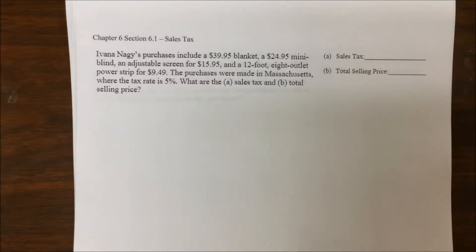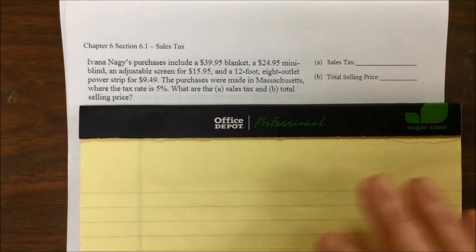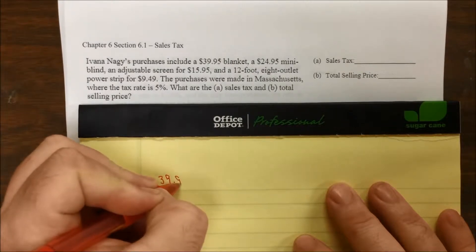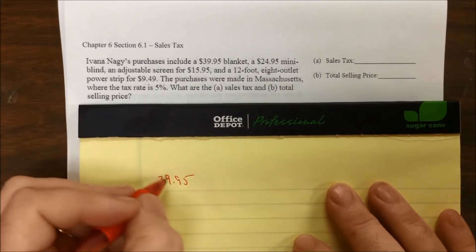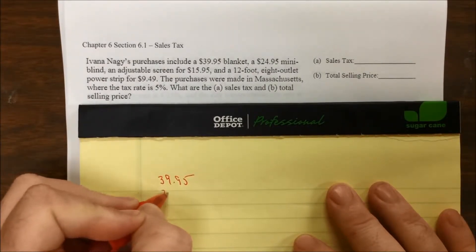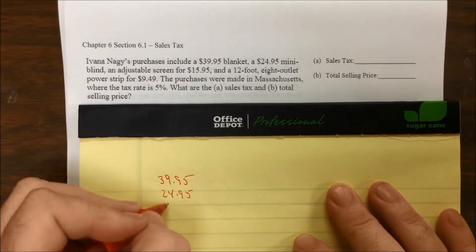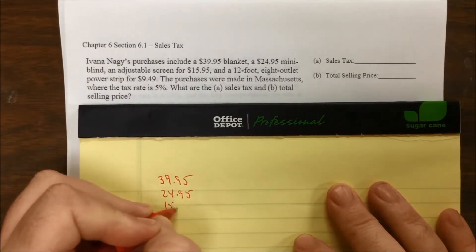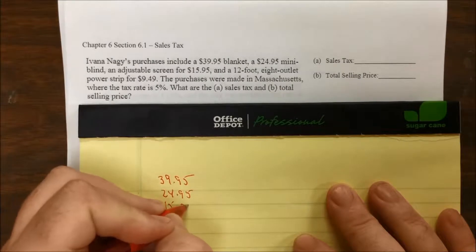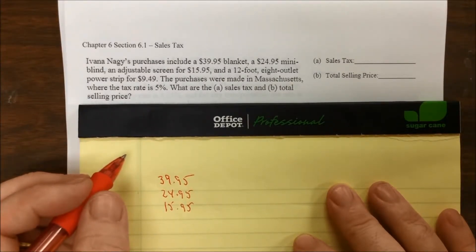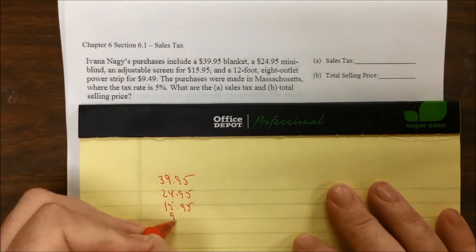Ivana's purchases include a $39.95 blanket, a $24.95 mini blind, an adjustable screen for $15.95, and a 12-foot 8-outlet power strip for $9.49.